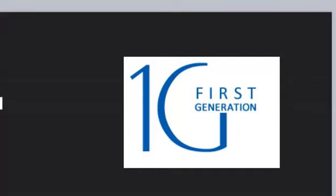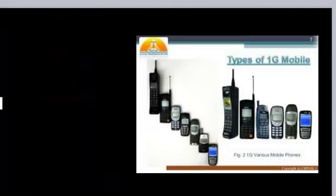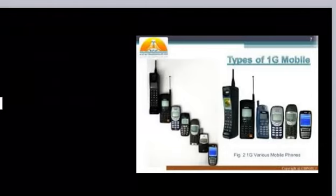First generation mobile, also called AMPS (Advanced Mobile Phone System), was invented in 1982 at Bell Laboratory. It supports only 5 to 10 type users in IMTS (Improved Mobile Telephone System). It had weak security on the air interface and used full analog mode of communication with no roaming.